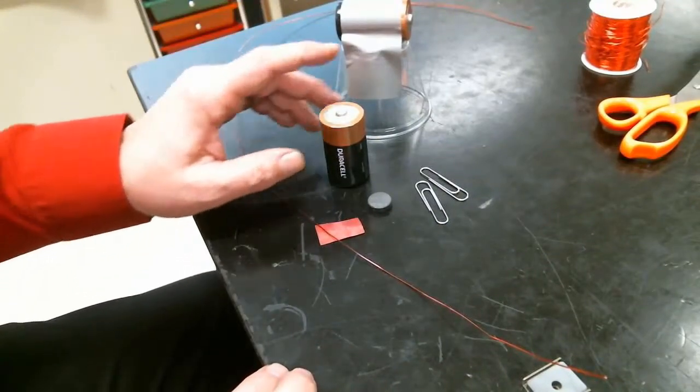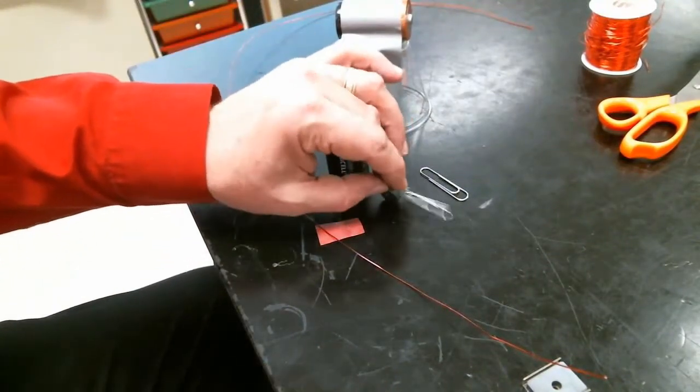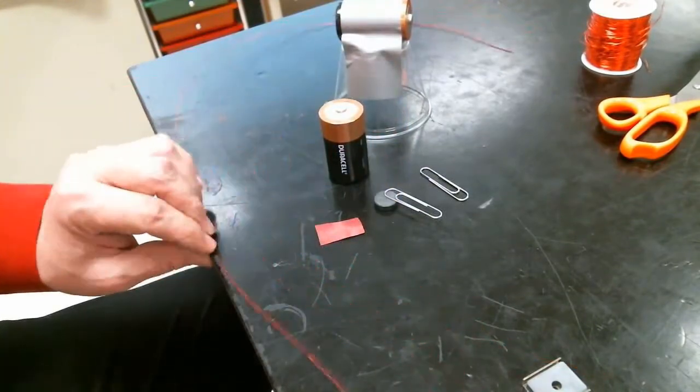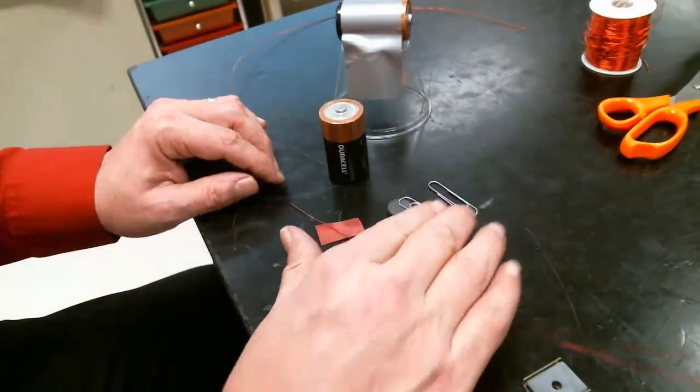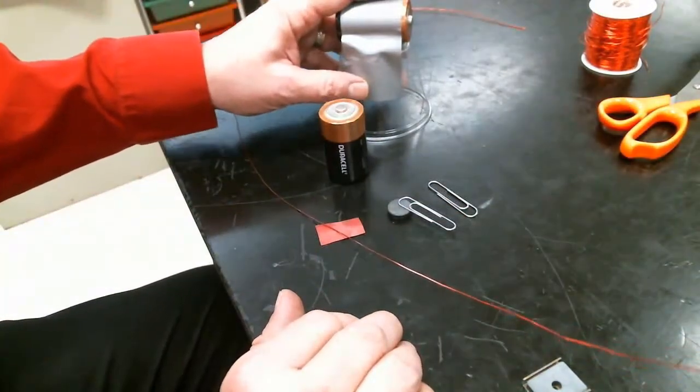Today we're going to build an electric motor from a battery, a small magnet, a piece of varnished magnet wire, a couple of paper clips, and a plastic cup with some tape.